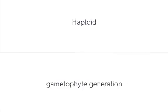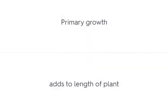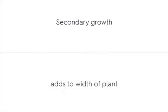The haploid gametophyte generation and the diploid sporophyte generation. Primary growth adds to the length of the plant. Secondary growth adds to the width of the plant.